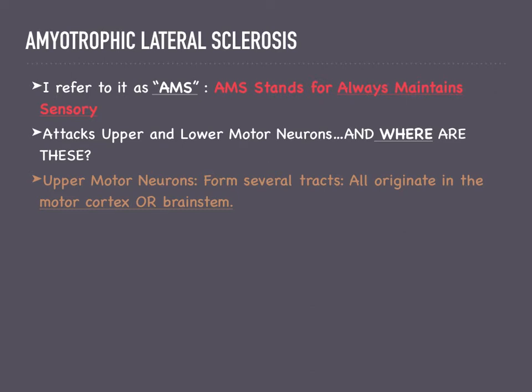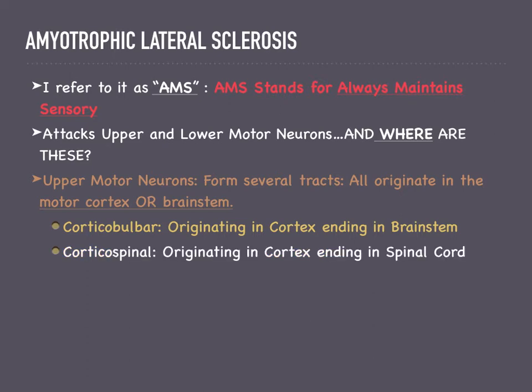The corticobulbar tract is a major tract that starts in the brain and ends in the brain stem — it originates in the cortex and ends in the brain stem. Whereas the corticospinal tract originates in the cortex and ends in the spinal cord.